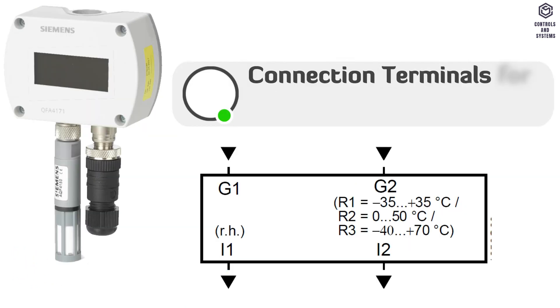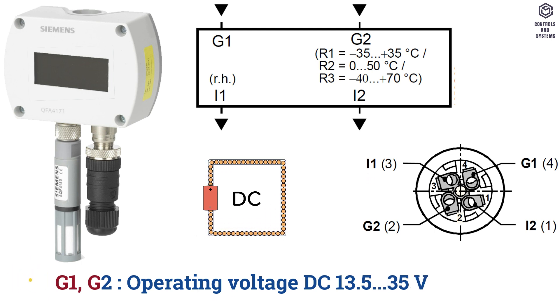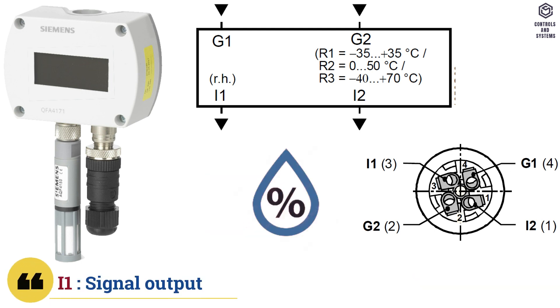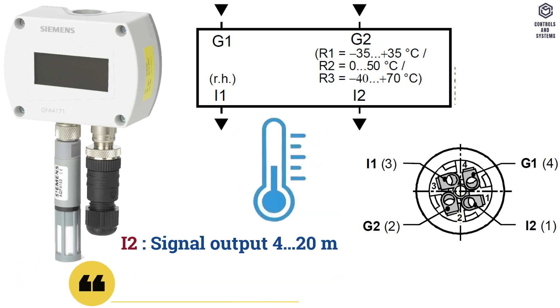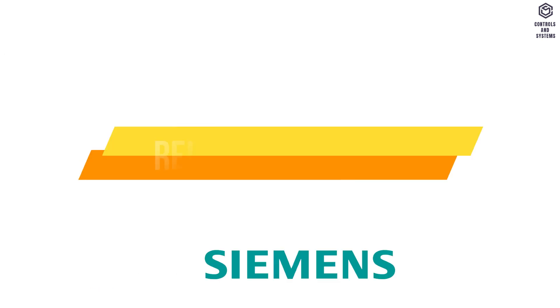Connection terminals for QFA4171: G1 and G2 is operating voltage DC 13.5 to 35 volt. I1 is signal output 4 to 20 milliamps for relative humidity. I2 is signal output 4 to 20 milliamps for temperature range.